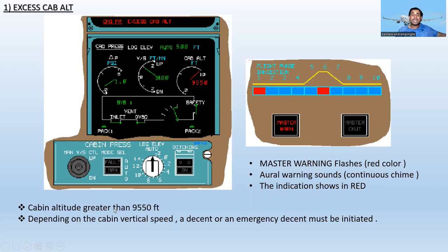When the cabin altitude is greater than 9,550 feet, the master warning will activate. Depending on the cabin vertical speed, a descent or an emergency descent must be initiated. This applies in specific flight phases.